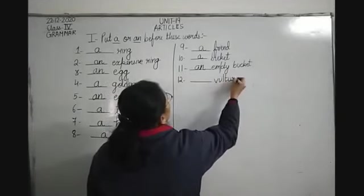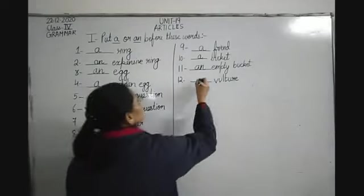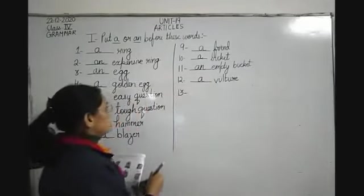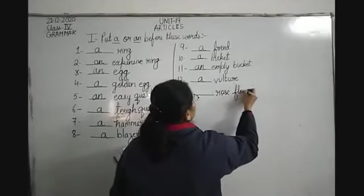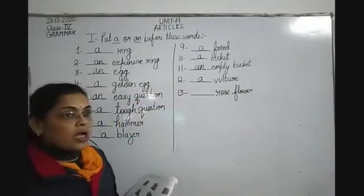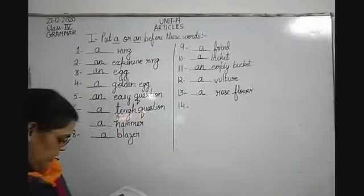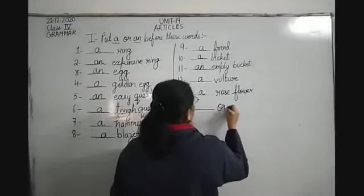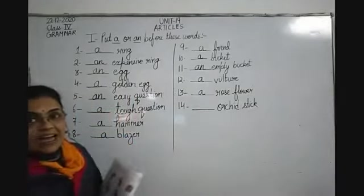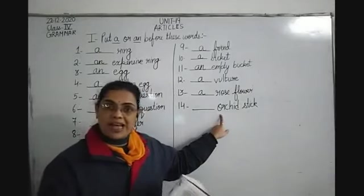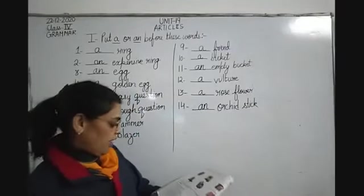Twelfth: dash vulture. Vulture starts with V which is a consonant and has a consonant sound, so A vulture. Thirteenth: A rose flower. Fourteenth: dash orchid stick. Orchid is a kind of flower. The word starts with O which is a vowel and has a vowel sound — orchid — so we use AN. It will be AN orchid stick.